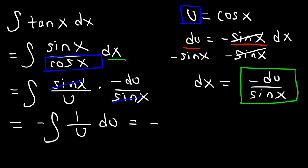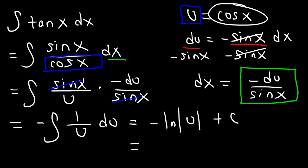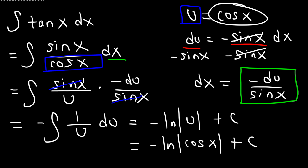The anti-derivative of 1 over u is the natural log function: ln of u plus C. Our next step is to replace u with what it equals — we set u equal to cosine — so we have negative natural log of cosine x plus C.